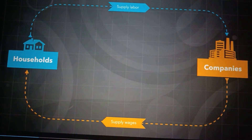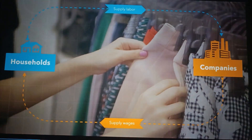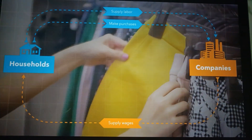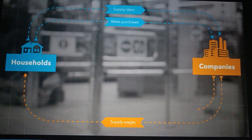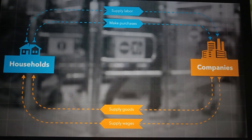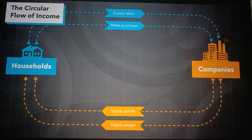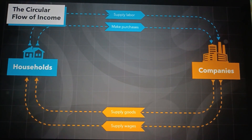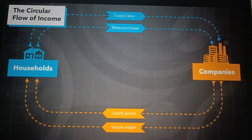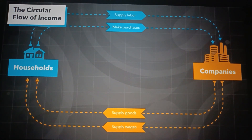The cycle we just saw — work in return for wages — also happens in reverse. In this process, workers in households give companies their money, using their wages to buy goods like food, clothing, electricity, or water. This cycle is known as the circular flow of income. It happens in every city and every country, everywhere, every day. It is the foundation of global economies.